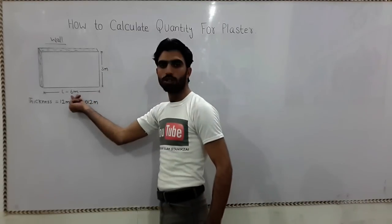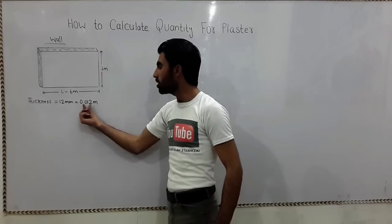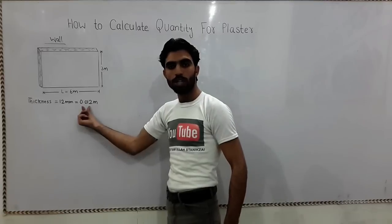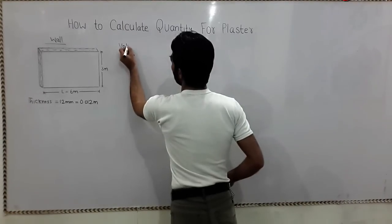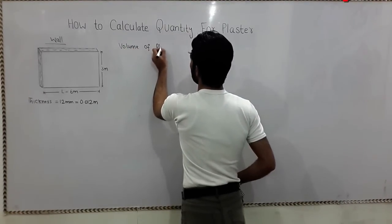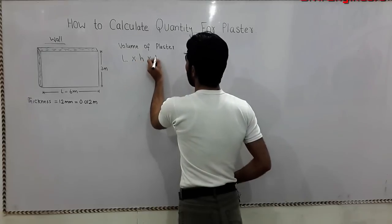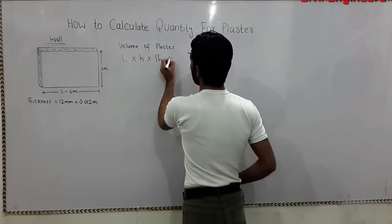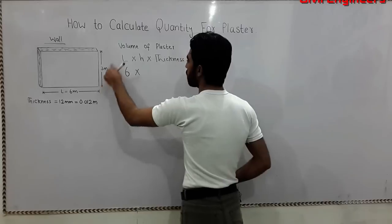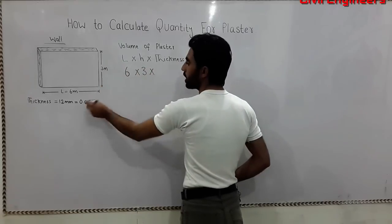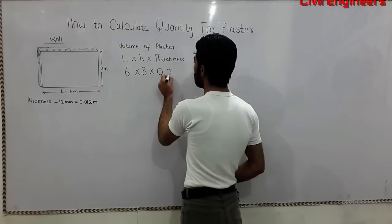This is the wall which has a length of 6 meters and a height of 3 meters, and the thickness of the plaster is 20 millimeters, which is 0.012 meters. So let's find out the volume for the plaster. Volume of plaster equals length multiplied by height multiplied by thickness. Length of the wall is 6 meters, height is 3 meters, and thickness of the plaster is 0.012.